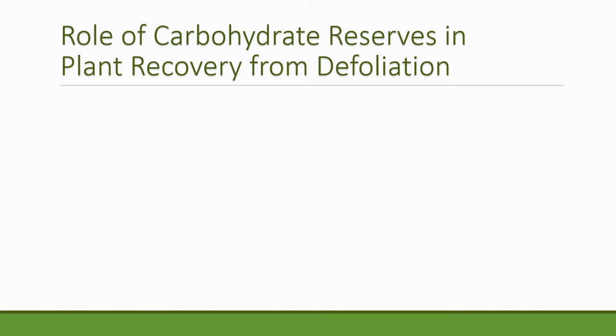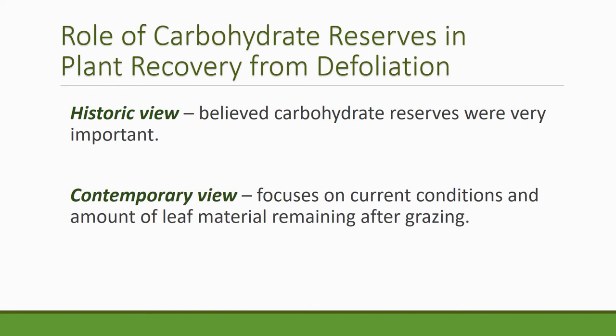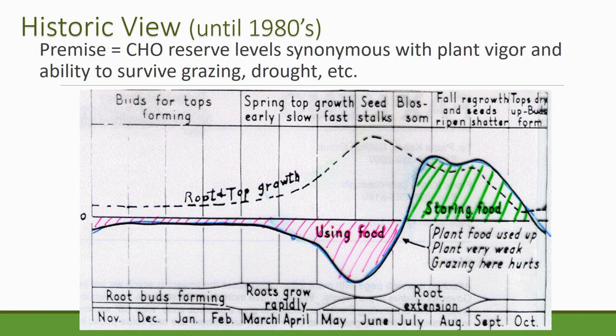There's a theory called carbohydrate reserve theory, and it's important because carbohydrate reserves are what allow the plant to recover from defoliation. In the historic view — up until about the 1980s — we believed carbohydrate reserves were very important, and that we had to pay attention to the pool of carbohydrate reserves a plant had for recovery from fire or grazing. I'm going to show you the historic and the contemporary views so you can compare and contrast them. Even though the historic view is now considered wrong, it shows up a lot in literature, so when you see it, think twice.